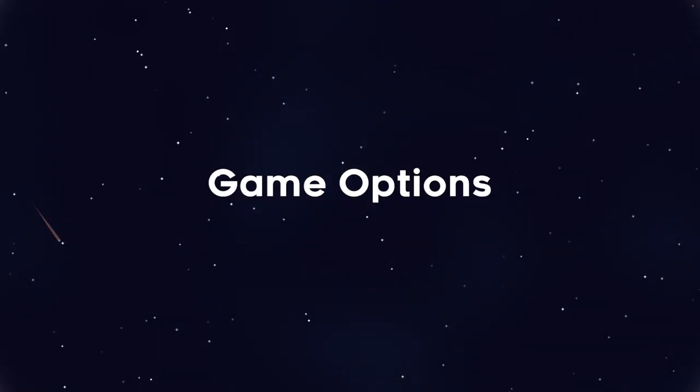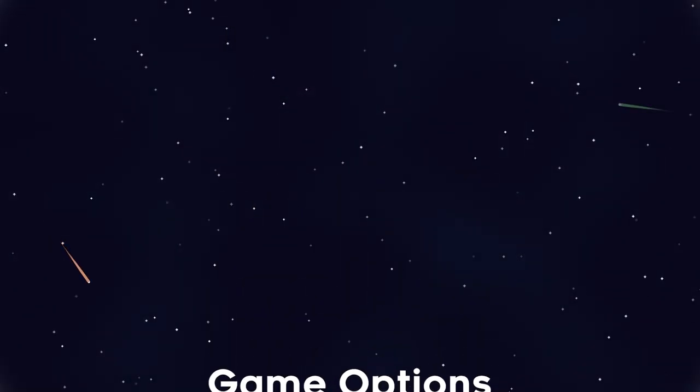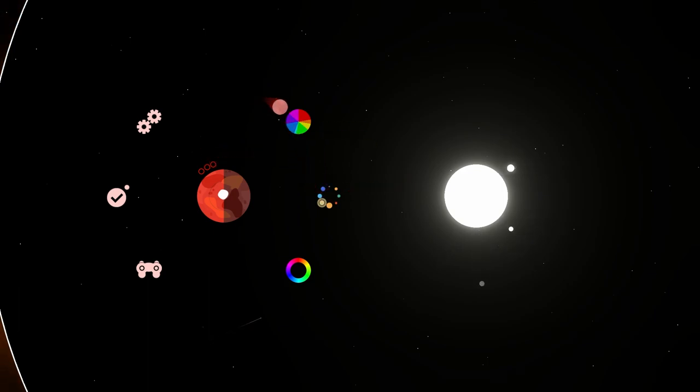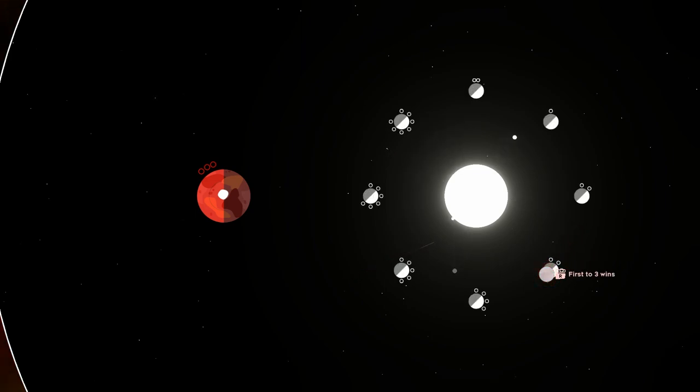To change options that affect all players, I decided to take advantage of the sun in the middle of the menu. Picking the game options selector changes your moon's orbit to the sun. Here, you can change the number of rounds needed for a win.